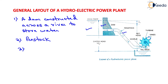Third is the turbine, having different types of vanes fitted to the wheels. The last one is the tailrace, which is a channel that carries water away from the turbine after the water has worked on the turbine. The surface of water in the tailrace channel is also known as the tailrace.